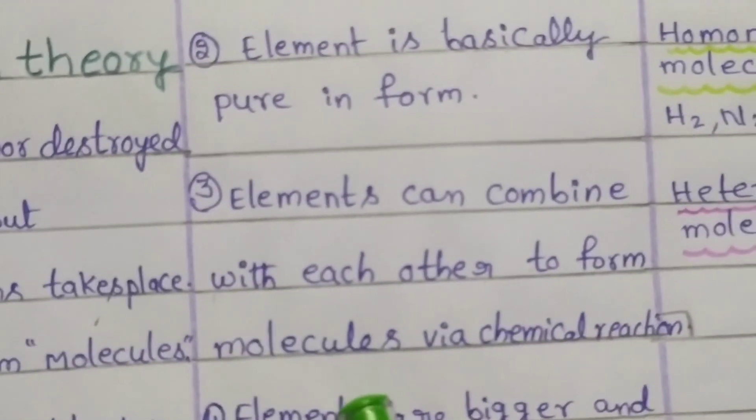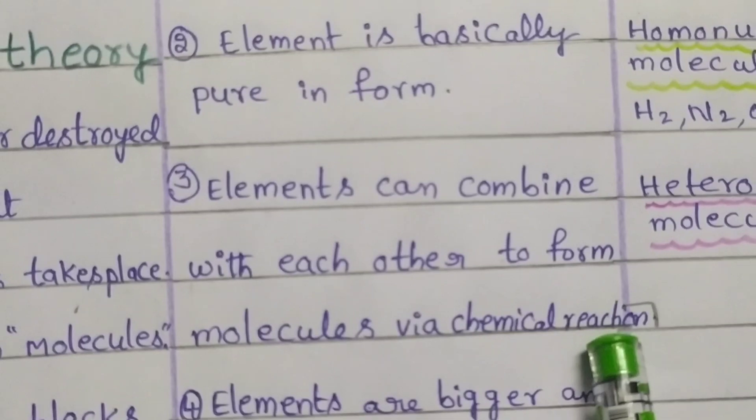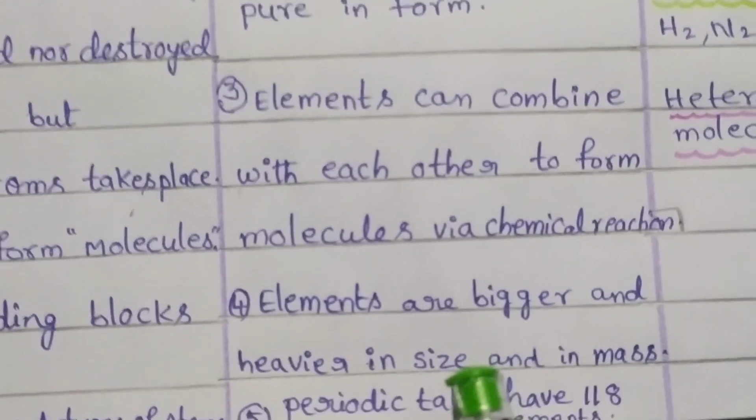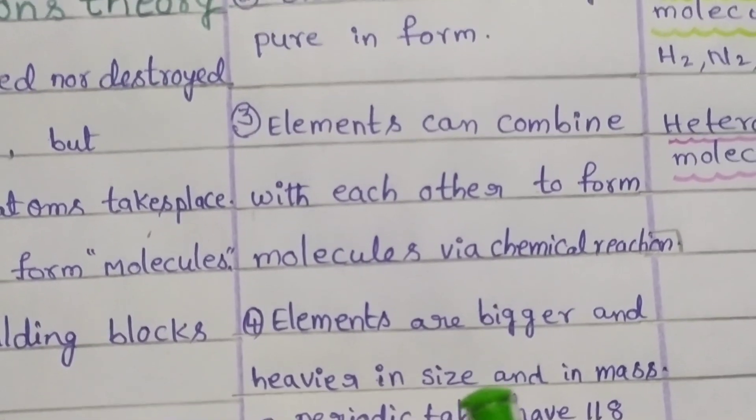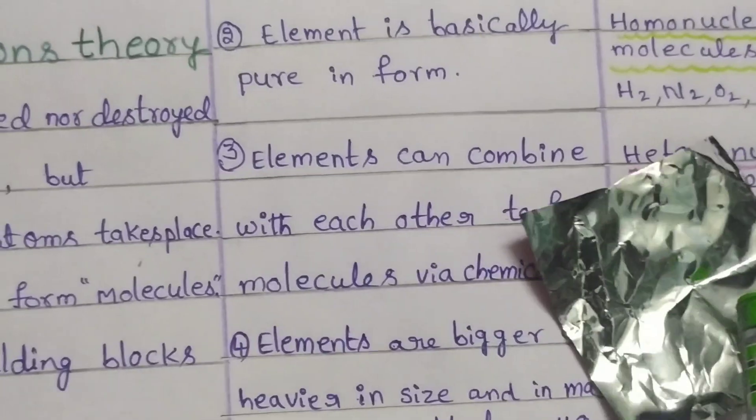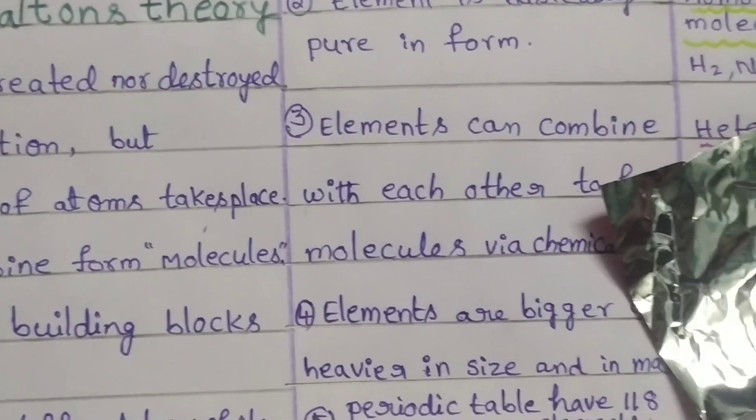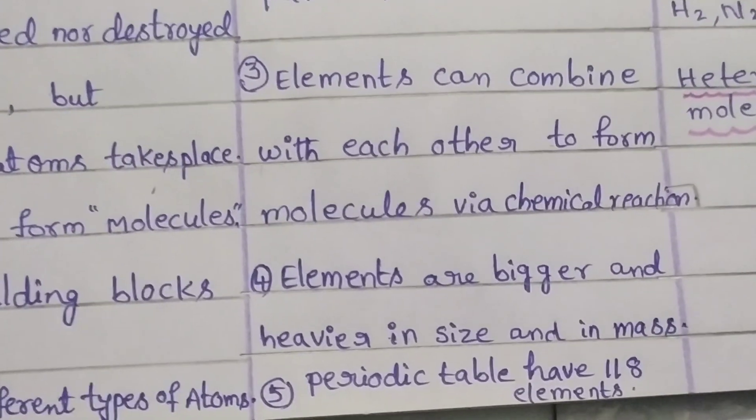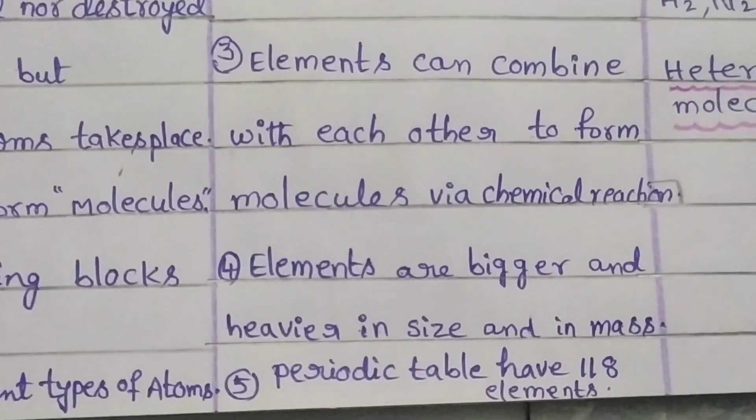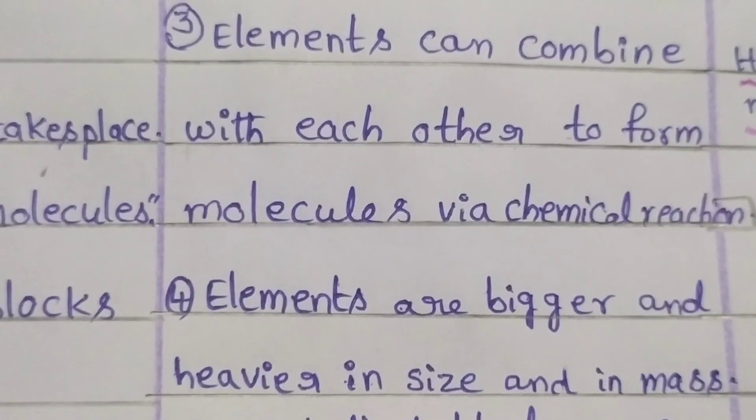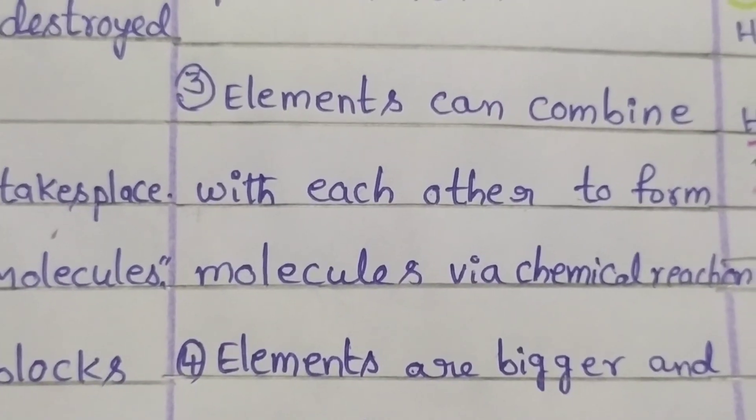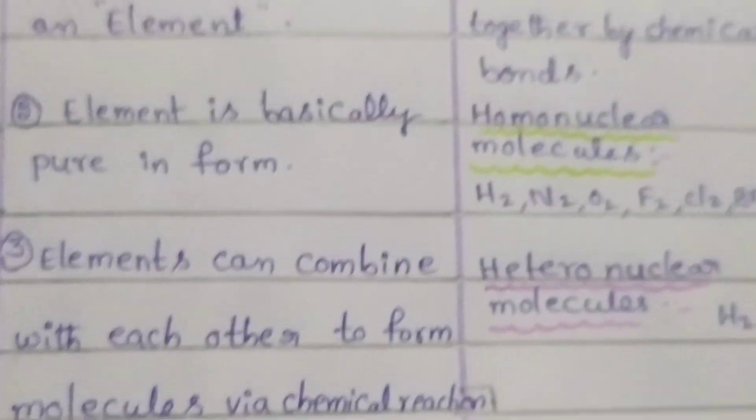Elements can combine with each other to form molecules via a chemical reaction. Elements are bigger and heavier in size and in mass. We can see them with the help of our naked eye, for example, aluminum foil. This is an example for aluminum element. The periodic table contains 1 to 118 elements. The starting element is hydrogen with atomic number 1 and the ending element is oganesson, with atomic number 118.